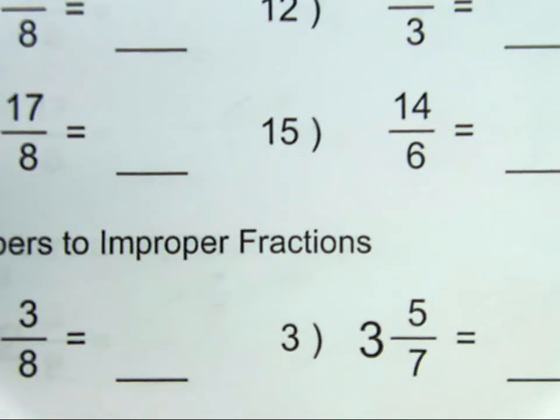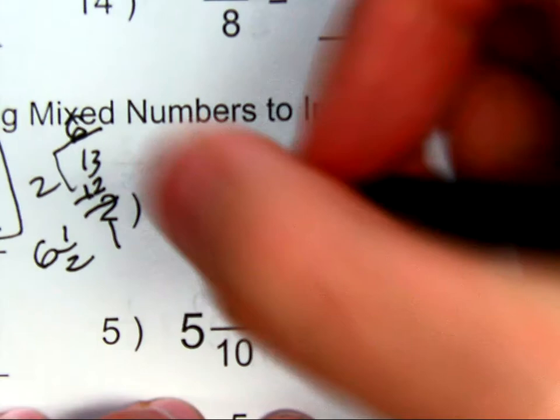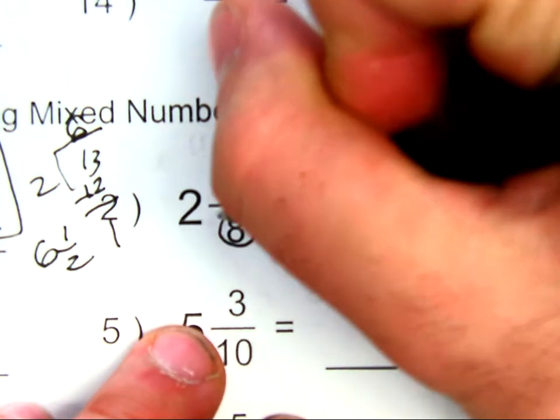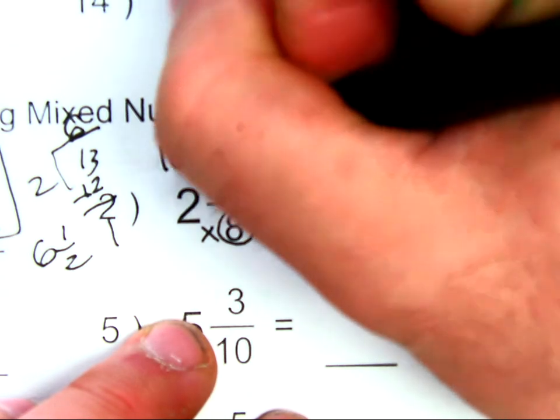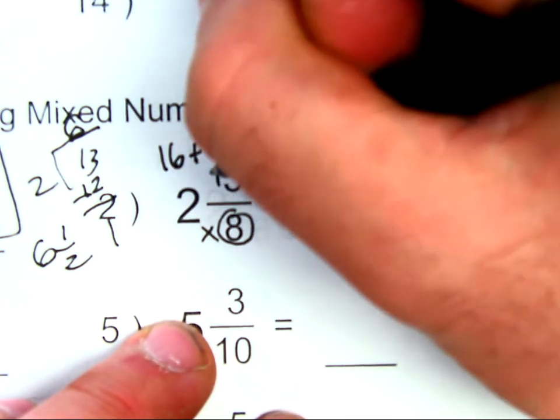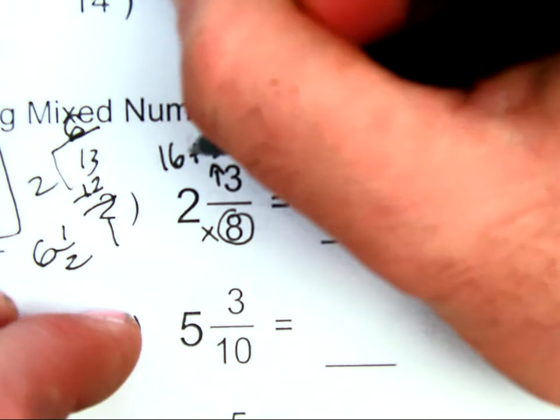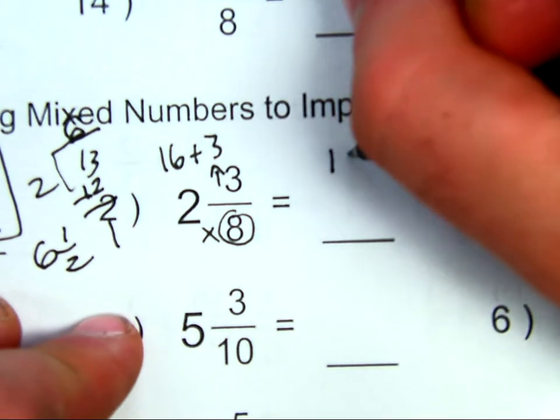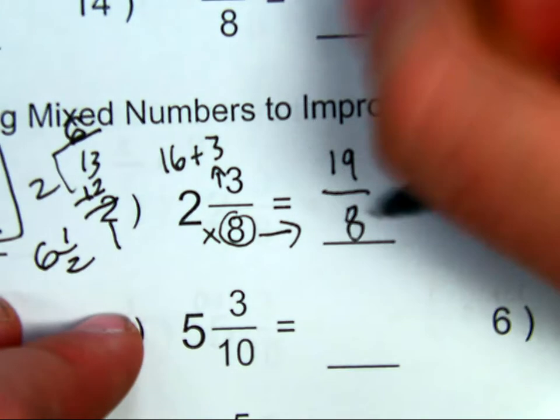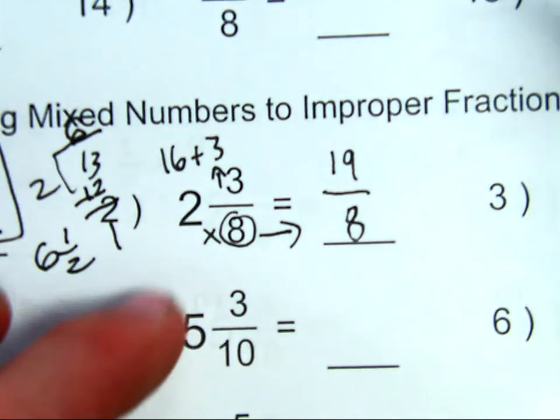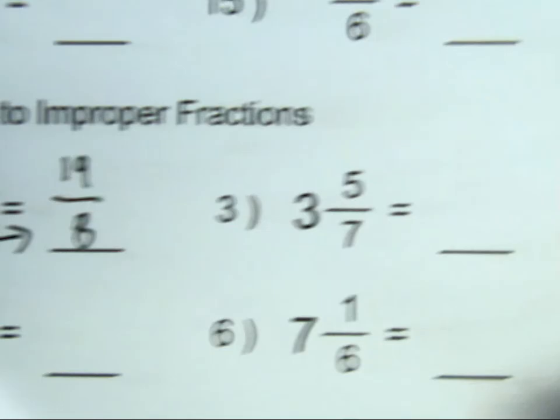Number 2. Follow my same method. I'm going to multiply my denominator times my whole number. 8 times 2 will be 16. Then I'm going to add my numerator. That's what I have left over. 16 plus 3 is 19. I keep my denominator. 19 over 8. If I check that, I would say it would be 2 and 3 eighths.